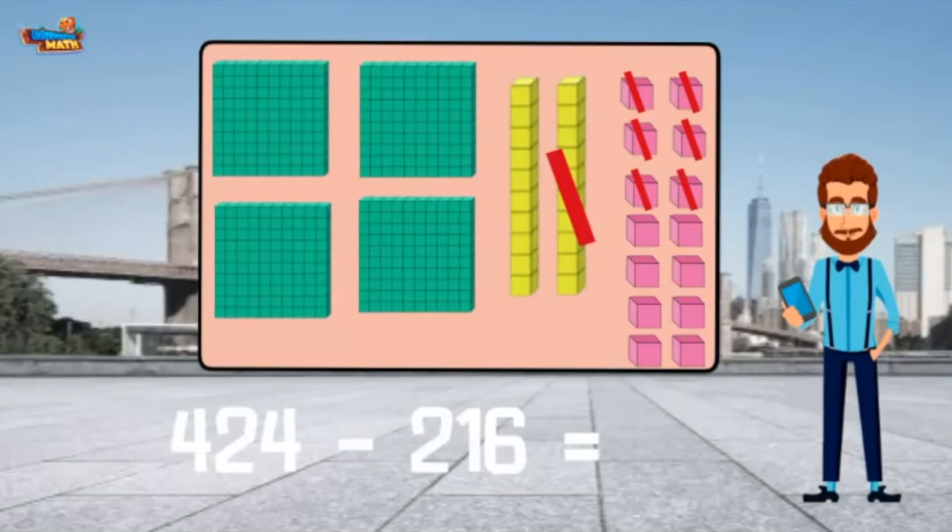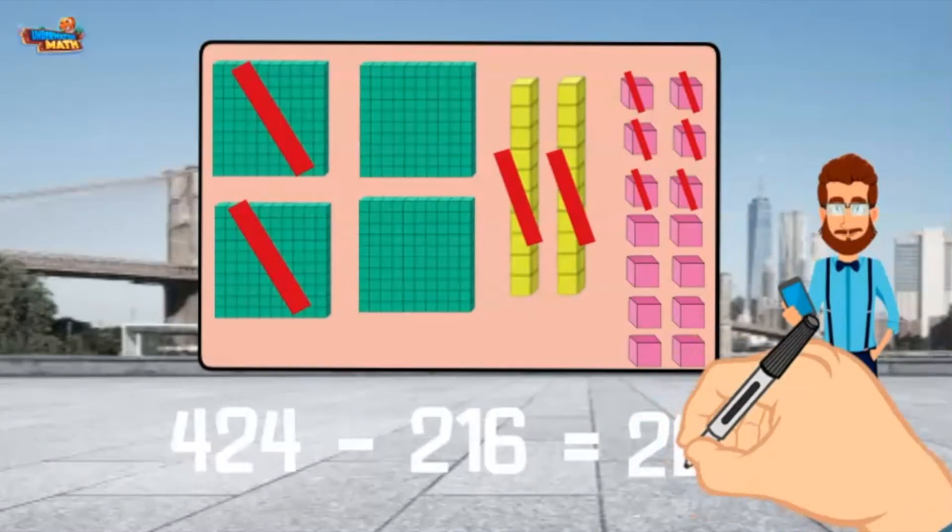Next, I take away 1 ten. And finally, take away 2 hundreds. 424 minus 216 equals 208.